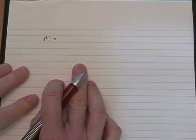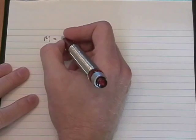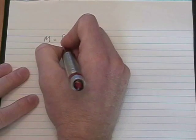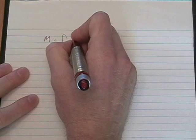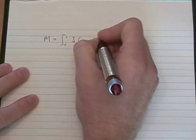Now the last thing we have to do is calculate the mass. The mass is simply the integral of dm. And we already have that as delta times y minus y cubed dy.